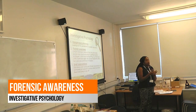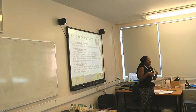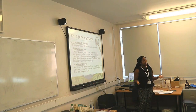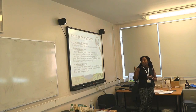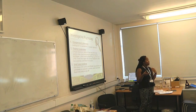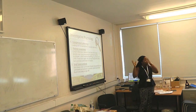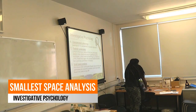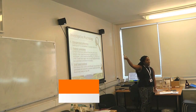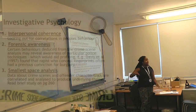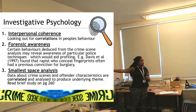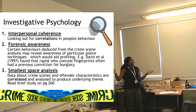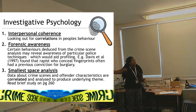If you're able to find out that a suspect seems to be forensically aware about procedures we would follow to catch them — looking for fingerprints, blood, semen — that helps us to profile them as someone who's quite intelligent. Certain behaviors that the suspect produces reveal their overall profile. The smallest space analysis is very similar to interpersonal coherence. The only difference is that with smallest space analysis they make correlations but then produce underlying themes, as seen in Canter's research. It builds upon interpersonal coherence but then produces underlying themes.